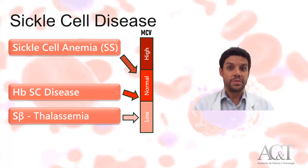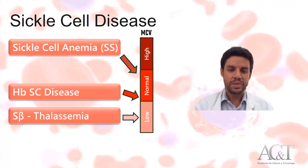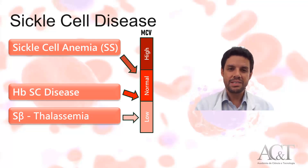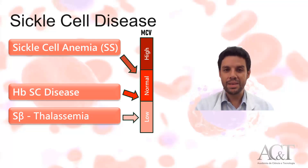Whereas for S-beta thalassemia, it's a classic presentation with a microcytic and hypochromic anemia because of the thalassemia component.